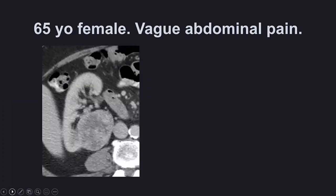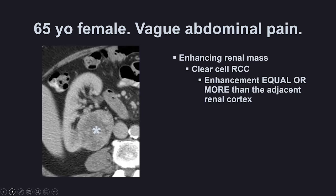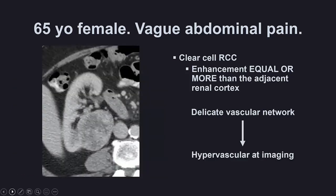Case two: we have a 65-year-old female with vague abdominal pain. We have an enhancing renal mass. The diagnosis here is clear cell renal cell carcinoma. The enhancement is equal or more than the adjacent renal cortex. That's because clear cell renal cell carcinoma under the microscope has a delicate vascular network with a lot of blood vessels — a lot of vascularity for a low-power image. A delicate vascular network under the microscope translates to hypervascularity at imaging. So when you see an enhancing renal mass and enhancement is equal or more than the adjacent renal cortex, think clear cell RCC.